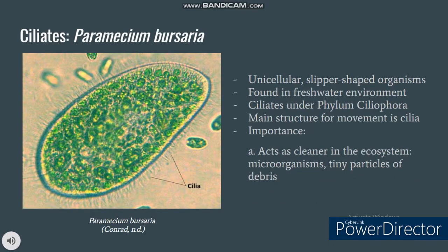The third organism is Paramecium bursaria, a unicellular and slipper-shaped organism found in freshwater environments. It is part of a group of organisms known as ciliates under phylum Ciliophora. Their bodies are covered in cilia, which serve as the main structure for movement. A Paramecium propels itself by whiplash movements of the cilia arranged in tightly spaced rows around the outside of the body. Paramecium acts as a cleaner in the ecosystem, feeding on microorganisms like algae, bacteria, and other small organisms, and also helping clean tiny particles of debris in water.